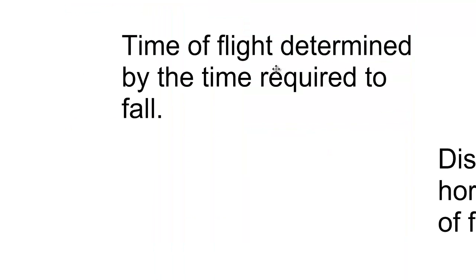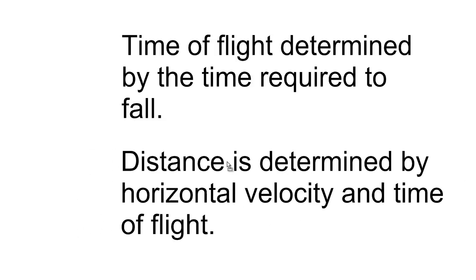Fortunately, the time of flight is just determined by the time required for the object to fall. It doesn't matter how fast it's going horizontally — it will accelerate towards the earth with the same acceleration as if we just dropped it. So we can figure out the time of flight with our kinematics equation. The distance is then determined by the horizontal velocity and the time of flight, making it a relatively easy thing to figure out.